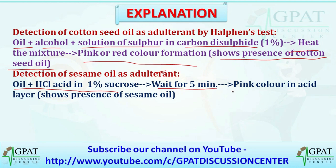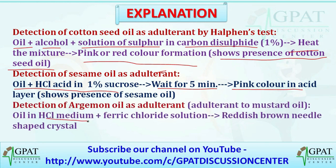For detection of argemone oil as an adulterant in mustard oil: oil in HCl medium plus ferric chloride solution — if reddish brown needle-shaped crystals form, it shows the presence of argemone oil.